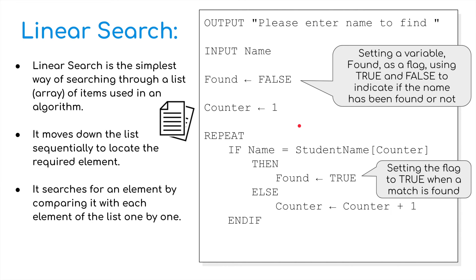Now, moving on to the fourth one, linear search. Linear search is the simplest way of searching through a list or an array of items used in an algorithm. So if you pretend, for those of you who have done Python program before, we've got a program here which is calling on, which is using an external text file or an external spreadsheet of a list of items. So it moves down a list sequentially to locate the required element. It searches for an element by comparing it with each element in the list one by one.